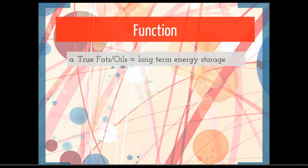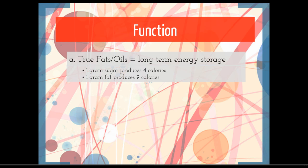Functions vary along with the different types. True fats and oils are mainly for long-term energy storage. If you burn one gram of sugar over an open fire, it's going to produce four calories. If you take the same amount of fat, it's going to produce nine calories. That tells you that fat is just a more efficient way of storing energy — you can pack more energy into a smaller space. Biologically, fat is a really great and efficient way to store extra energy.